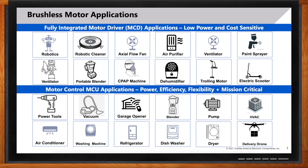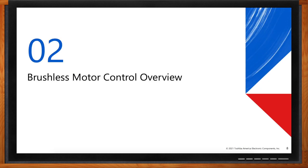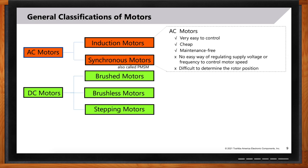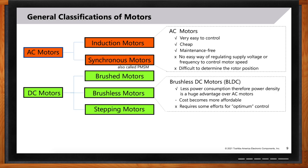Before getting into finer details, let's look at the general ecosystem of motors. There are many different types, but they can be classified into two main types: AC motors and DC motors. Motors to which alternating current is applied are called AC motors, further classified into induction and synchronous motors. AC motors are easy to control and cheap, but there's no easy way to regulate supply voltage and frequency without applying inverter control, and it's also very difficult to determine rotor position.